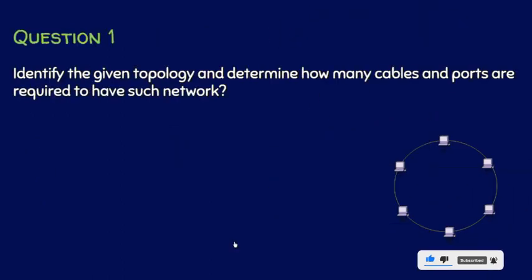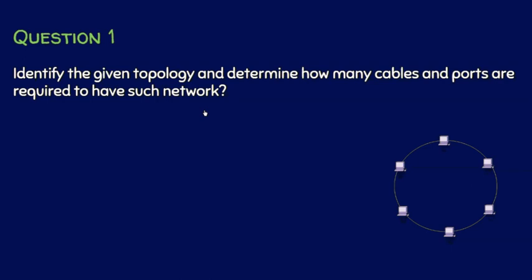Question number 1: Identify the given topology and determine how many cables and ports are required to have such a network. We are given a topology and we have to identify it. The answer is simple — this is a ring topology. Let us formally solve how many cables and ports are required to have such a network.